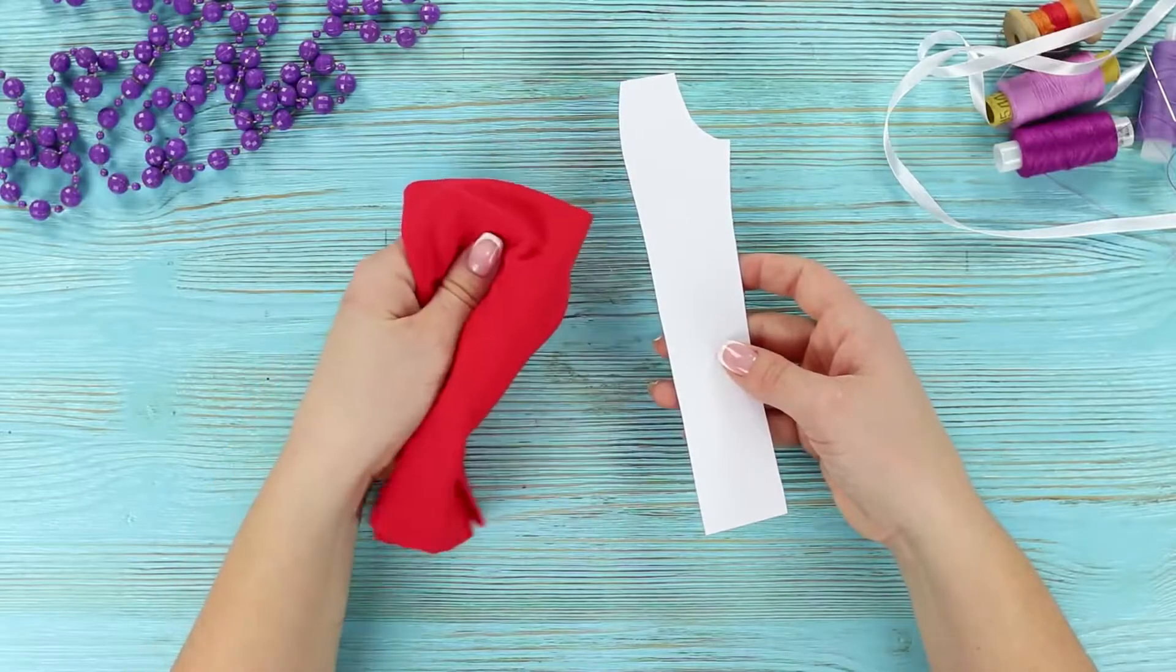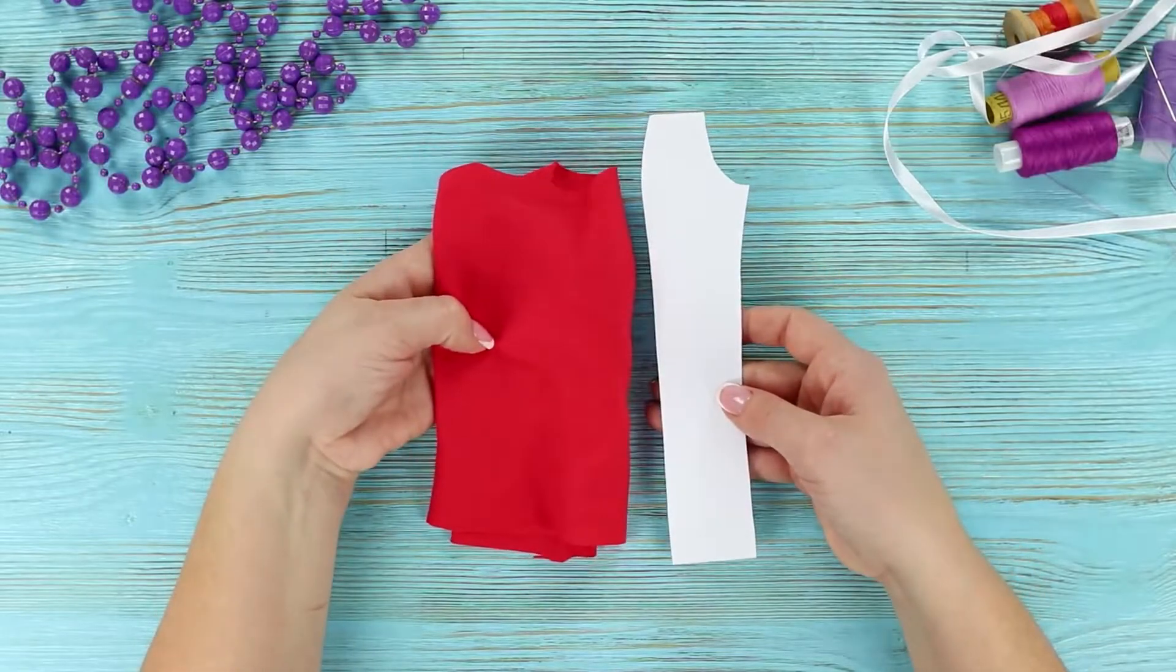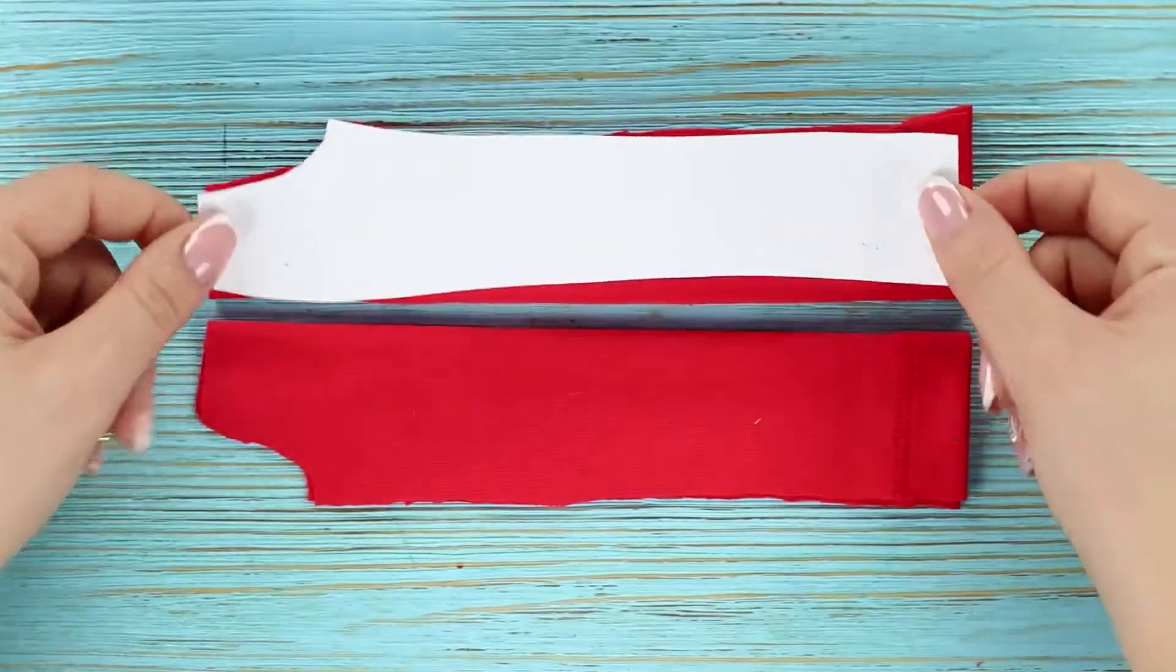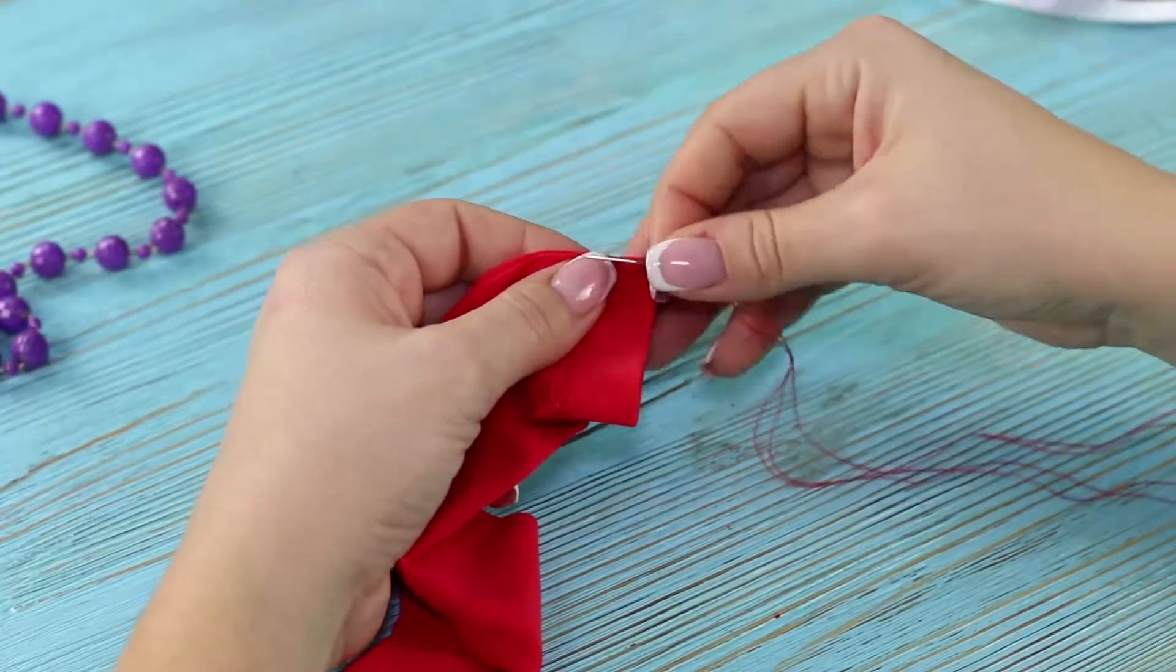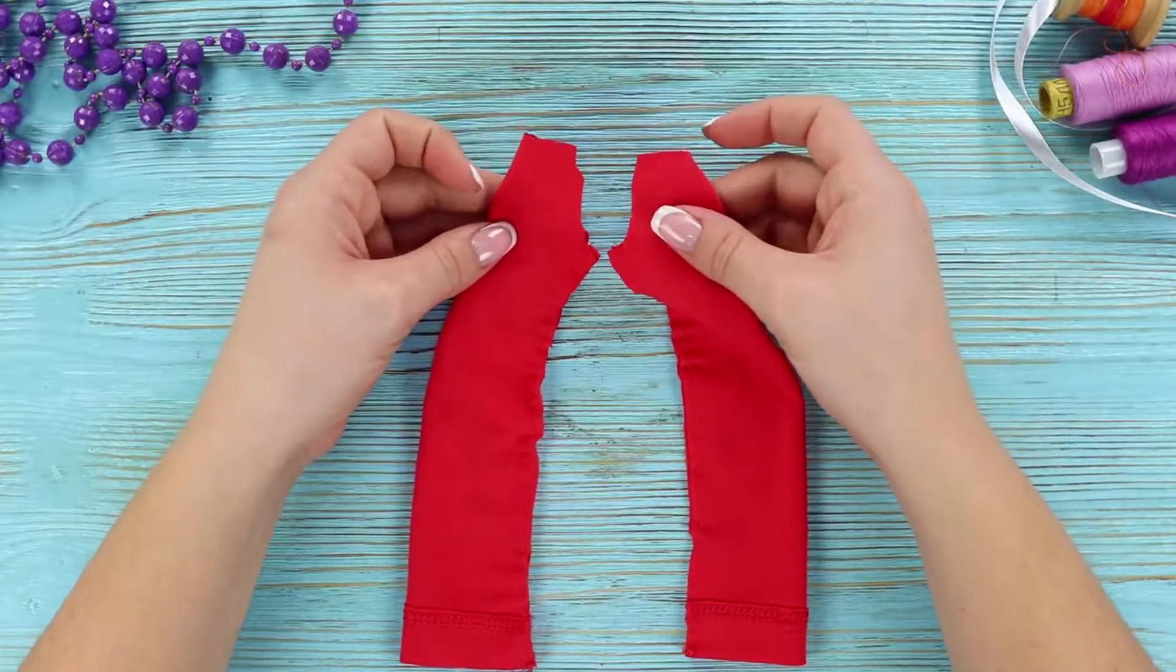And now prepare a paper template like this and a piece of bright fabric. Cut out two parts. Stitch the outer edge and stitch the legs to each other.